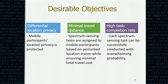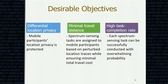We have the following design objectives for our system. First, we want to achieve differential location privacy — that is, mobile participant location privacy is well protected. Second, we want to achieve minimal travel distance, so spectrum sensing tasks are assigned based on perturbed location traces while ensuring minimal total travel cost. Lastly, we want to achieve a high task completion rate, so each spectrum sensing task can be successfully conducted with overwhelming probability.